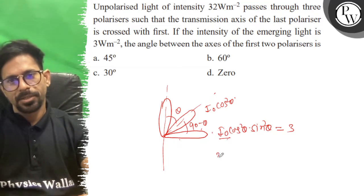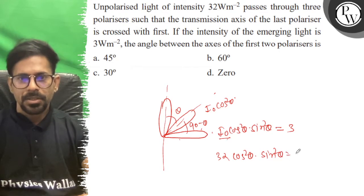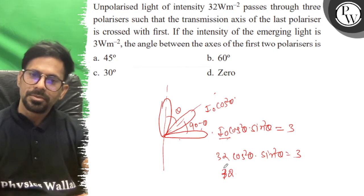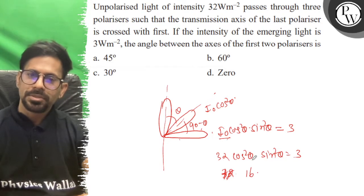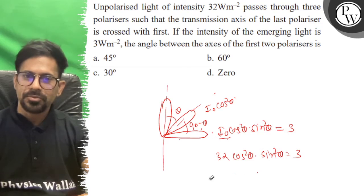And this is our 32. So cos squared theta into sin squared theta is equal to 3/32, which equals 16 times. So sin 2 theta...